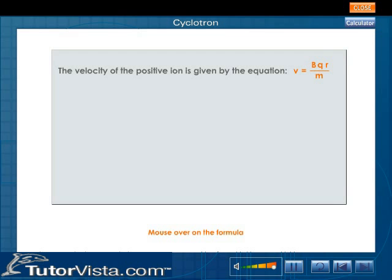The velocity of the positive ion is given by the equation V equals BQR by M.